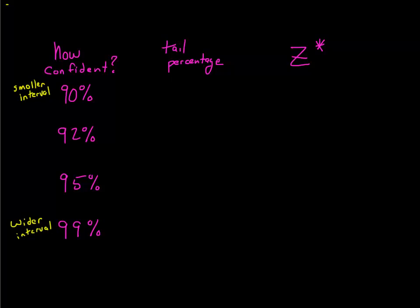Think about it: if you wanted to be 100% confident that you captured the true proportion, you would just go from 0 to 1, because that would have to capture it — every proportion is from 0 to 1. But obviously that would be silly. So the 95% confidence level has Z* = 1.96, plus or minus.